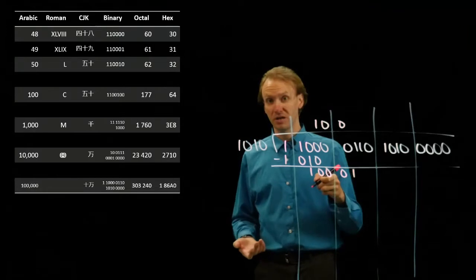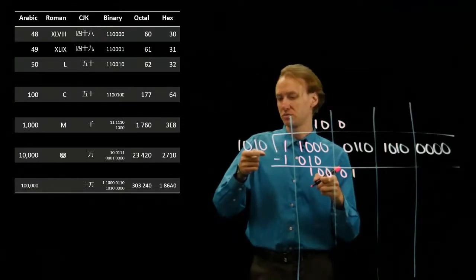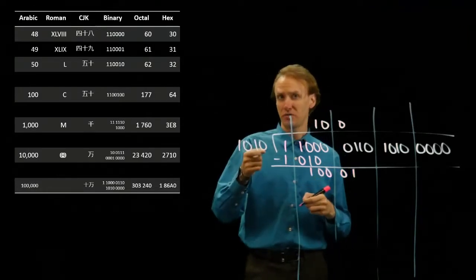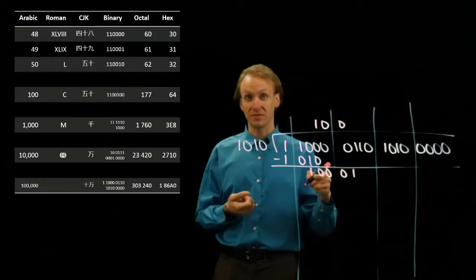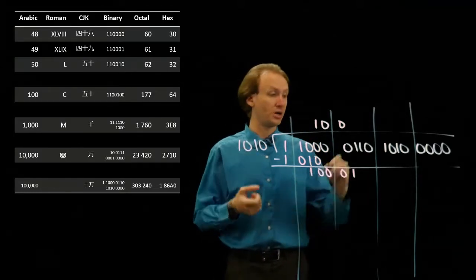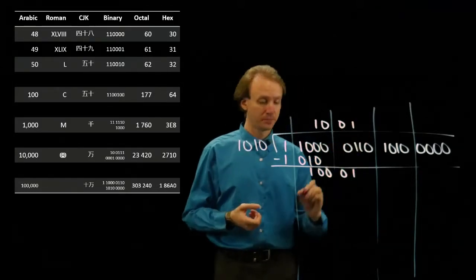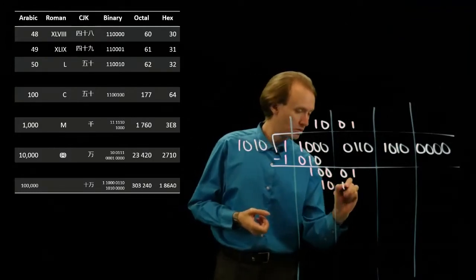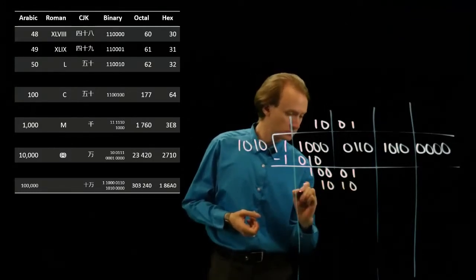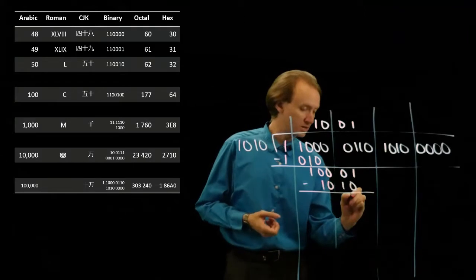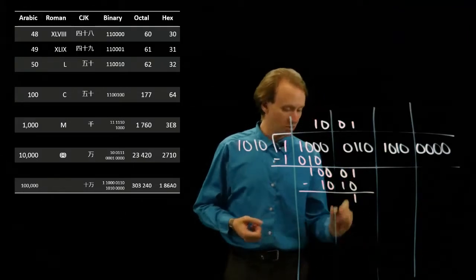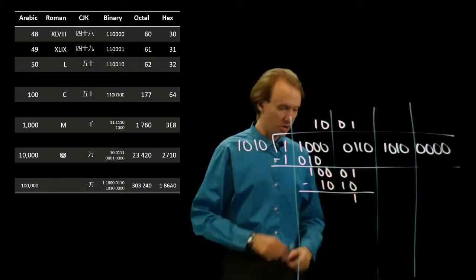Now I have a 5-bit number and I'm trying to subtract a 4-bit number. So I know the 4-bit number will always be smaller than the 5-bit number. So here I know I can do the subtraction. 1 minus 0 is 1. 0 minus 1. Now, lots of borrowing to be done here.